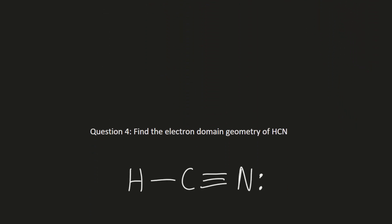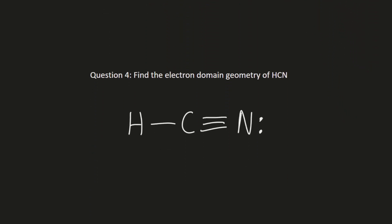Here is the next question. We can see that there is a single bond connecting the hydrogen atom and the central carbon atom. And on the other side, there is a triple bond connecting the carbon atom to the nitrogen atom. Since the triple bond only counts as one electron domain, and so does the single bond to hydrogen, there are only two electron domains in this compound, which gives it a shape of linear.